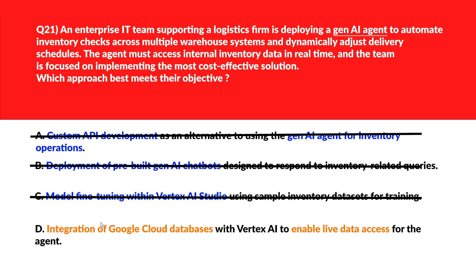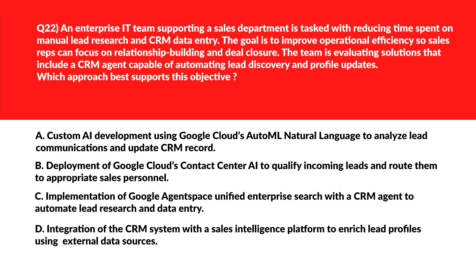Option D says integration of Google Cloud databases with Vertex AI to enable live data access for the agent. Real-time access through Google Cloud databases enables the gen AI agent to act on current inventory levels. Let's log Option D as the right answer.